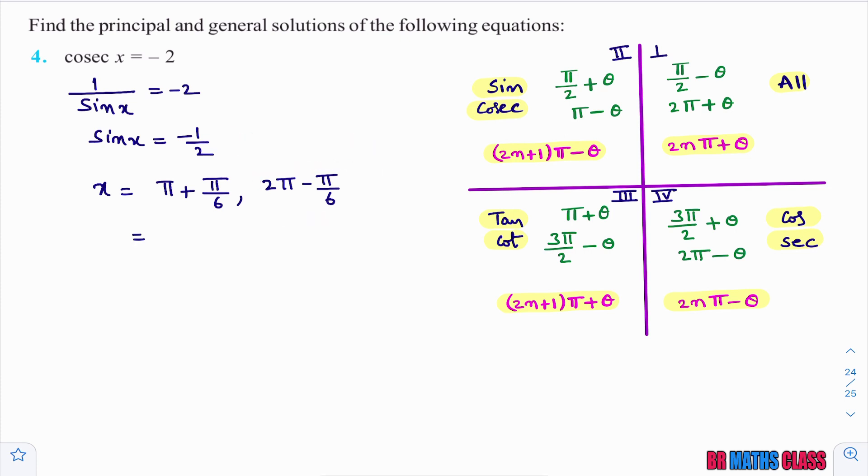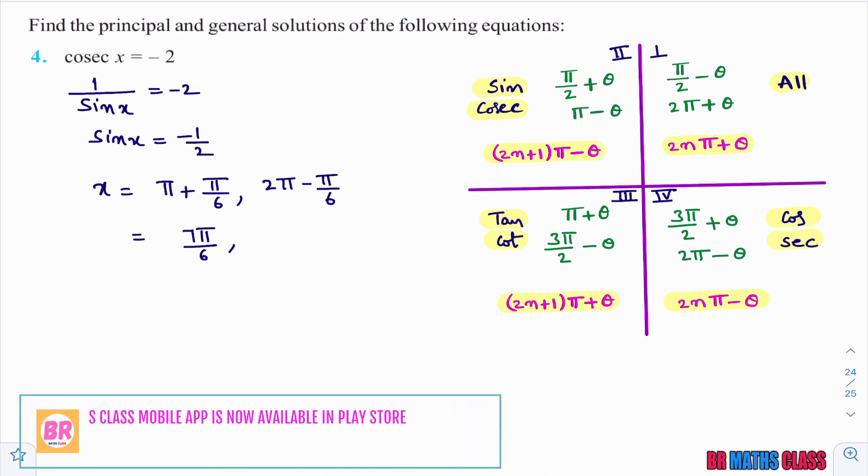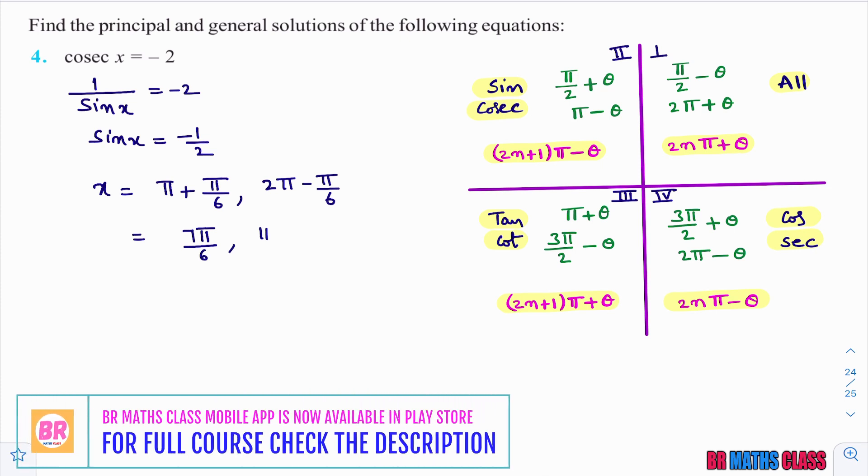Simplify this: 6pi plus pi, that is 7pi by 6, comma, 12pi minus pi, that is 11pi by 6.